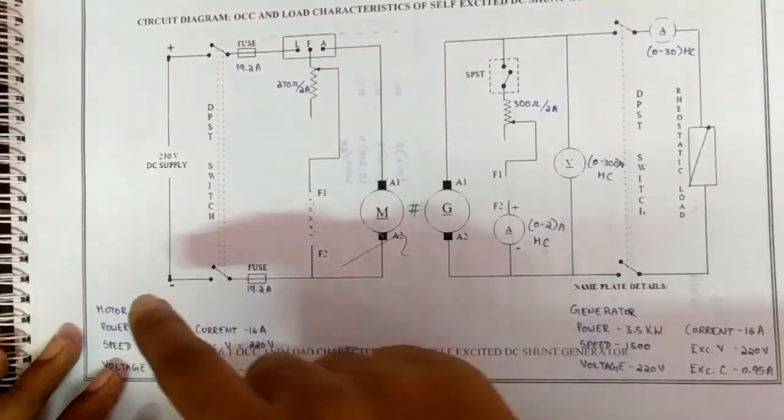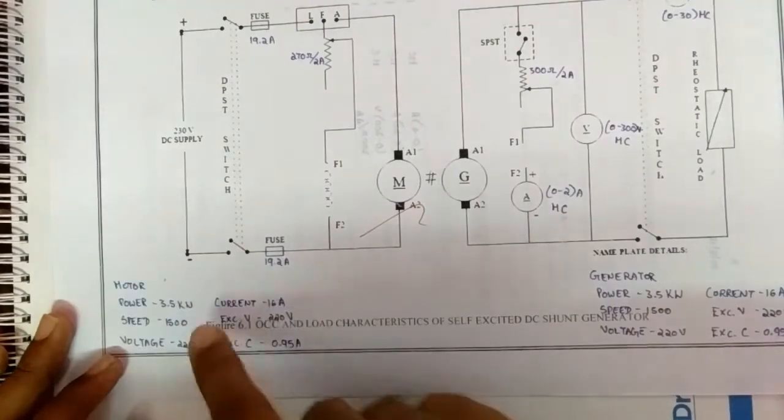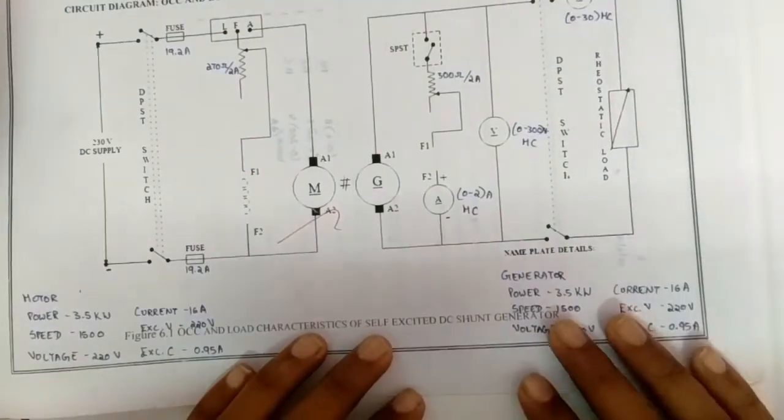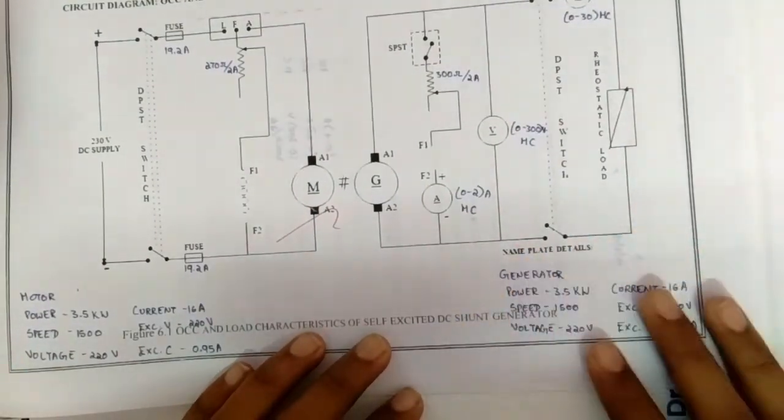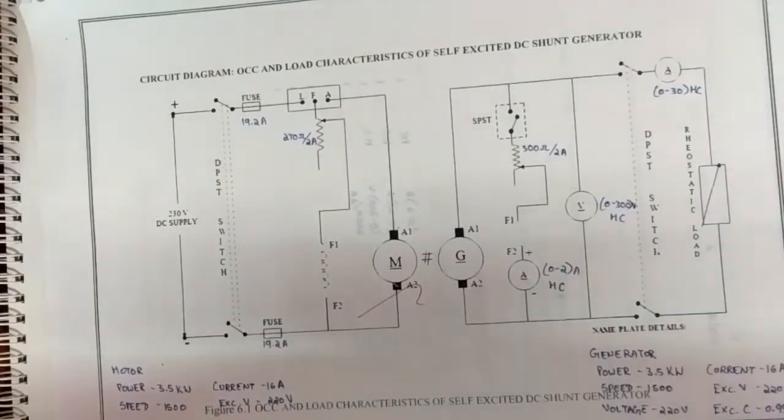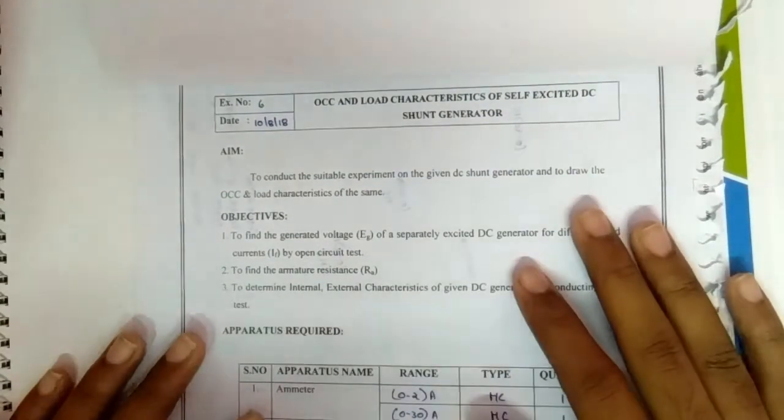The motor nameplate details will be this one, and for the generator the nameplate details are this one.